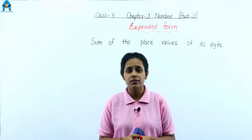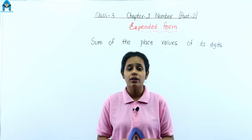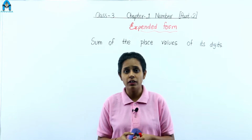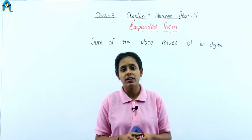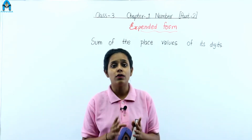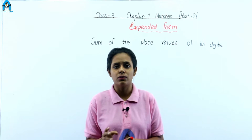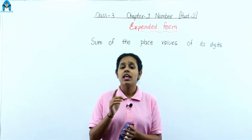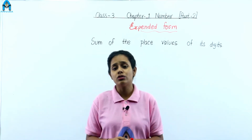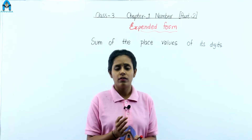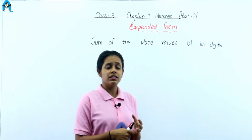Hello students, myself Ayurushi Tank. I welcome you on Invera Online School. Today we will start our next part for chapter 1. In our previous part, we learned about four digit numbers. The smallest four digit number is 1000 and the greatest four digit number is 9999. We also learned about the number name for four digit numbers, and face value and place value. Now let's start some more topics.